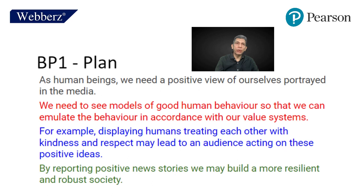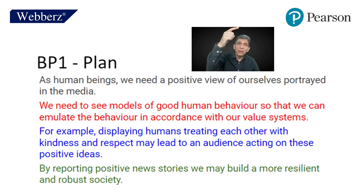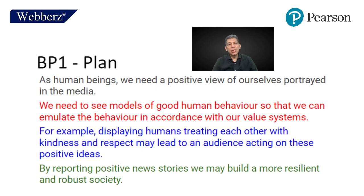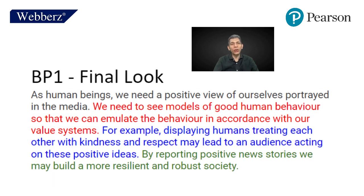Body paragraph 1: Main point — 'As human beings, we need a positive view of ourselves portrayed in the media.' Supporting point — 'We need to see models of good human behavior so that we can emulate that behavior in accordance with our value systems.' Example — 'Displaying humans treating each other with kindness and respect may lead to an audience acting on those positive ideas.' Wrap-up — 'By reporting positive news stories, we may build a more resilient and robust society.'